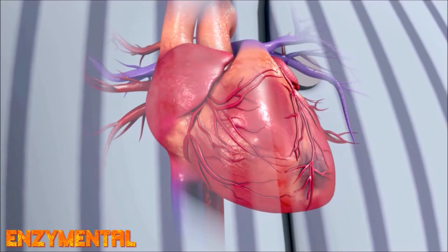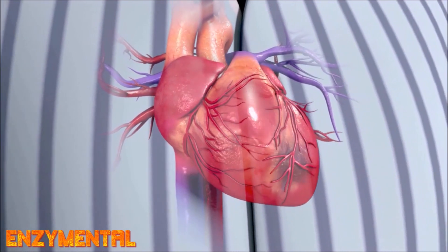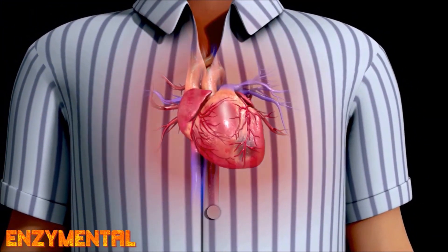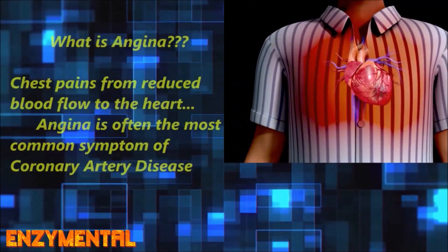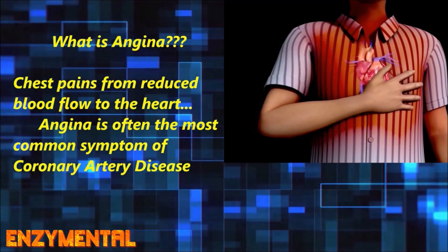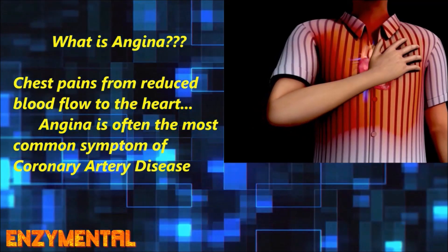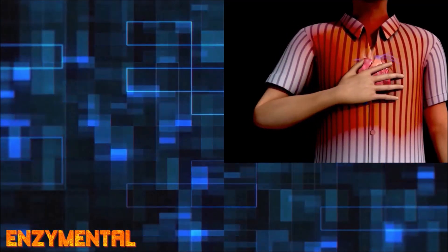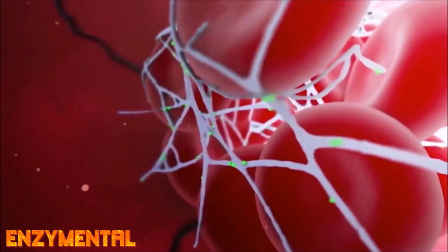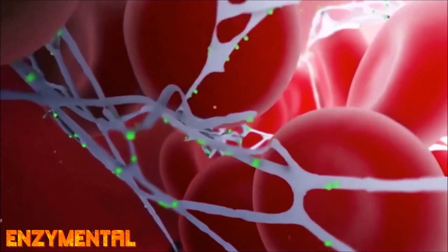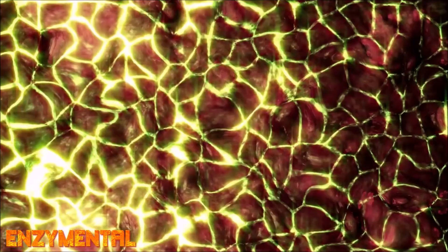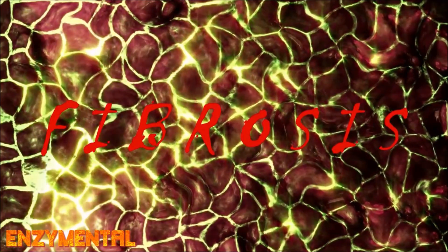One heart condition where lumbrokinase can be especially helpful is in a case of angina, which is primarily chest pain stemming from severely reduced blood flow to the heart. Angina is a symptom of coronary artery disease, which is accordingly a narrowing and/or blockage of the arteries that directly supply the heart, primarily due to plaque accumulation on the inner walls of these critical arteries. Because fibrin is a structural component of arterial plaque, along with cholesterol, cellular waste, and calcium, regular use of lumbrokinase and serrapeptase can reduce heart muscle damage and also the subsequent scarring, known as fibrosis, of cardiac tissue.